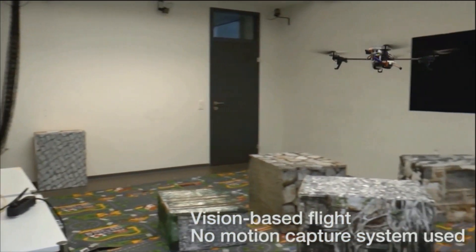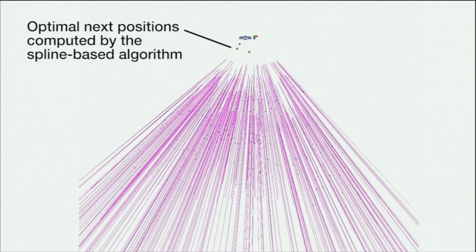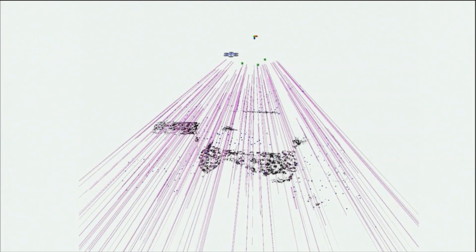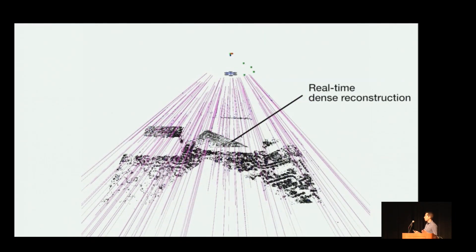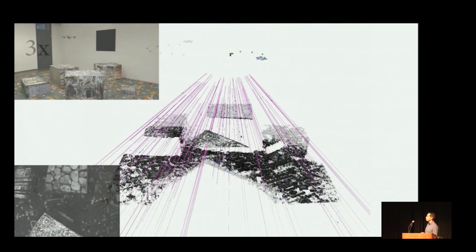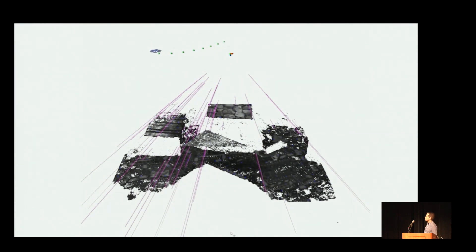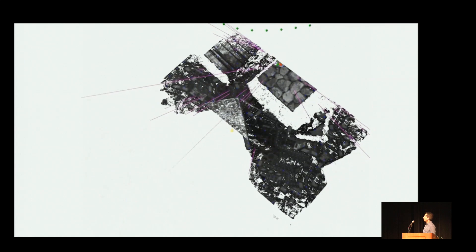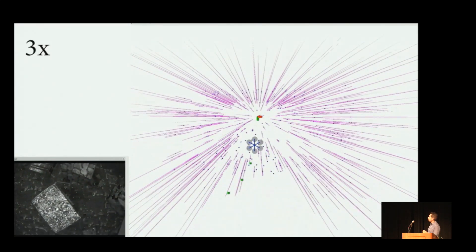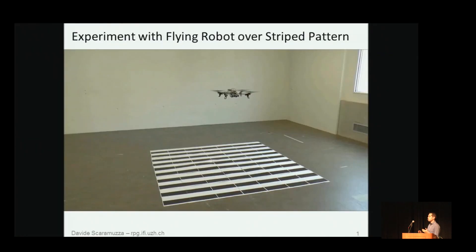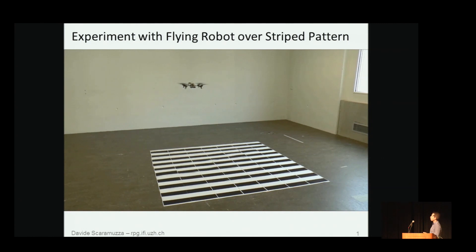The video shows real-time monocular active dense reconstruction from a quadrotor using only a single down-looking camera, actively generating trajectories that maximize information gain over the next eight viewpoints. Green dots denote predicted viewpoints and magenta denotes depth uncertainty estimates. The information gain is calculated as a function of the photometric disparity uncertainty. When the helicopter reaches the next waypoint and acquires a new image, the depth map is updated and the optimal trajectory is fully recomputed. When placed over a striped scene, as expected the helicopter moved perpendicular to the stripes. Please read the paper or come tomorrow morning to my poster session. Thank you.